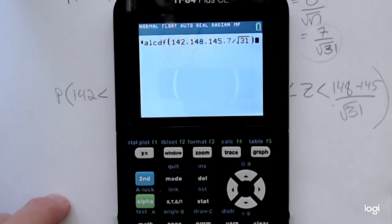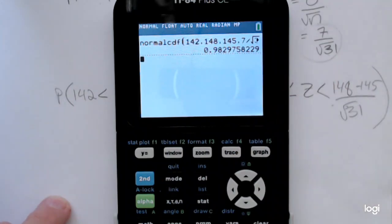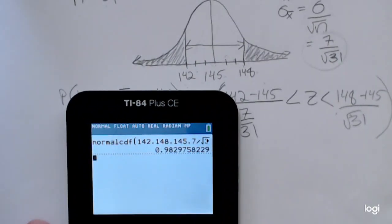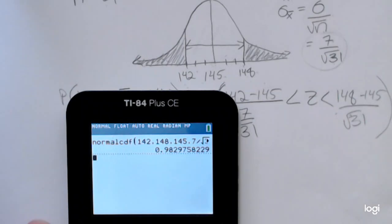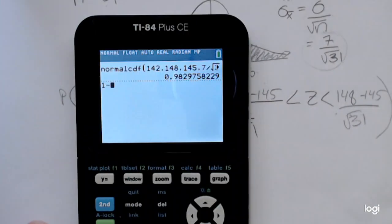And then enter. So this 0.982976 carried out pretty far is not the final answer. It is the area between the two shaded tails, and that's not what I want. So I'm going to go ahead and subtract that answer from 1.